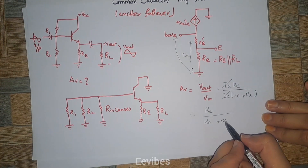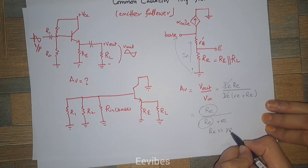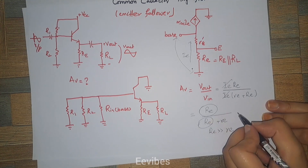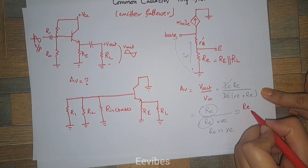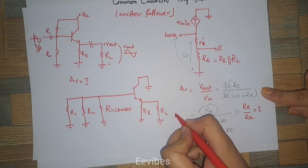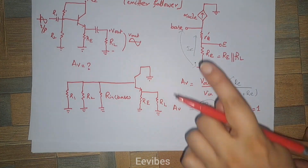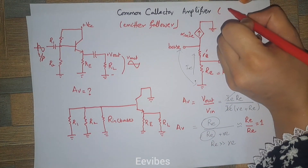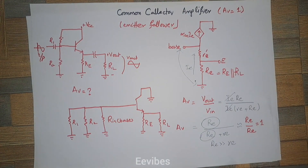The IE terms cancel out, leaving RE-E divided by (re + RE-E). Since RE is very large compared to the internal emitter resistance re — RE is usually in kilo-ohms while re is only 20 to 30 ohms — the voltage gain simplifies to RE-E over RE-E, which equals 1. This is the first property of the common collector amplifier: it does not provide voltage gain. Whatever input signal is present, you get a signal of the same magnitude at the output.